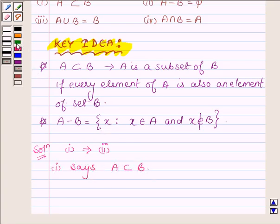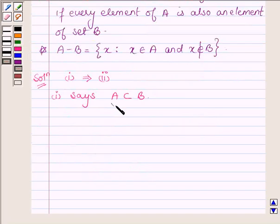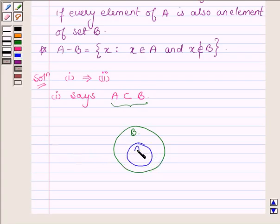So let us interpret this in the form of a Venn diagram. Suppose this is set B. And this is set A. So this denotes set A. And this whole denotes set B.